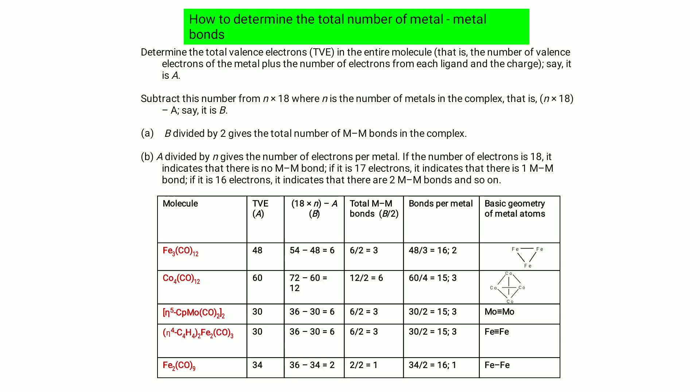Example: Co₄(CO)₁₂. Total valence electrons A = 60. Multiply 18 × 4 (four cobalt metals) = 72. Then 72 − 60 = 12 = B. Then 12 ÷ 2 = 6 total metal-metal bonds. The basic geometry of this molecule is square planar.